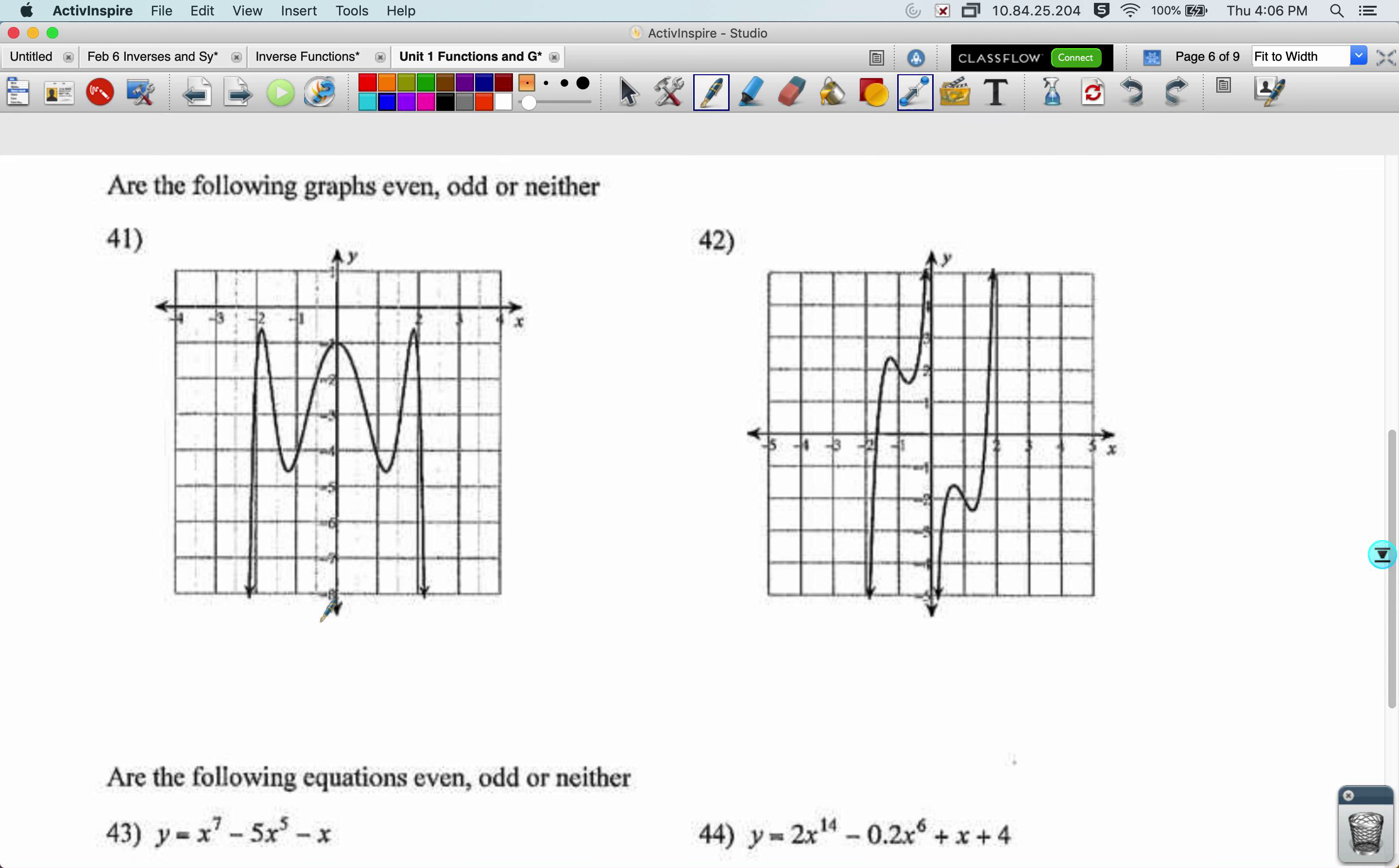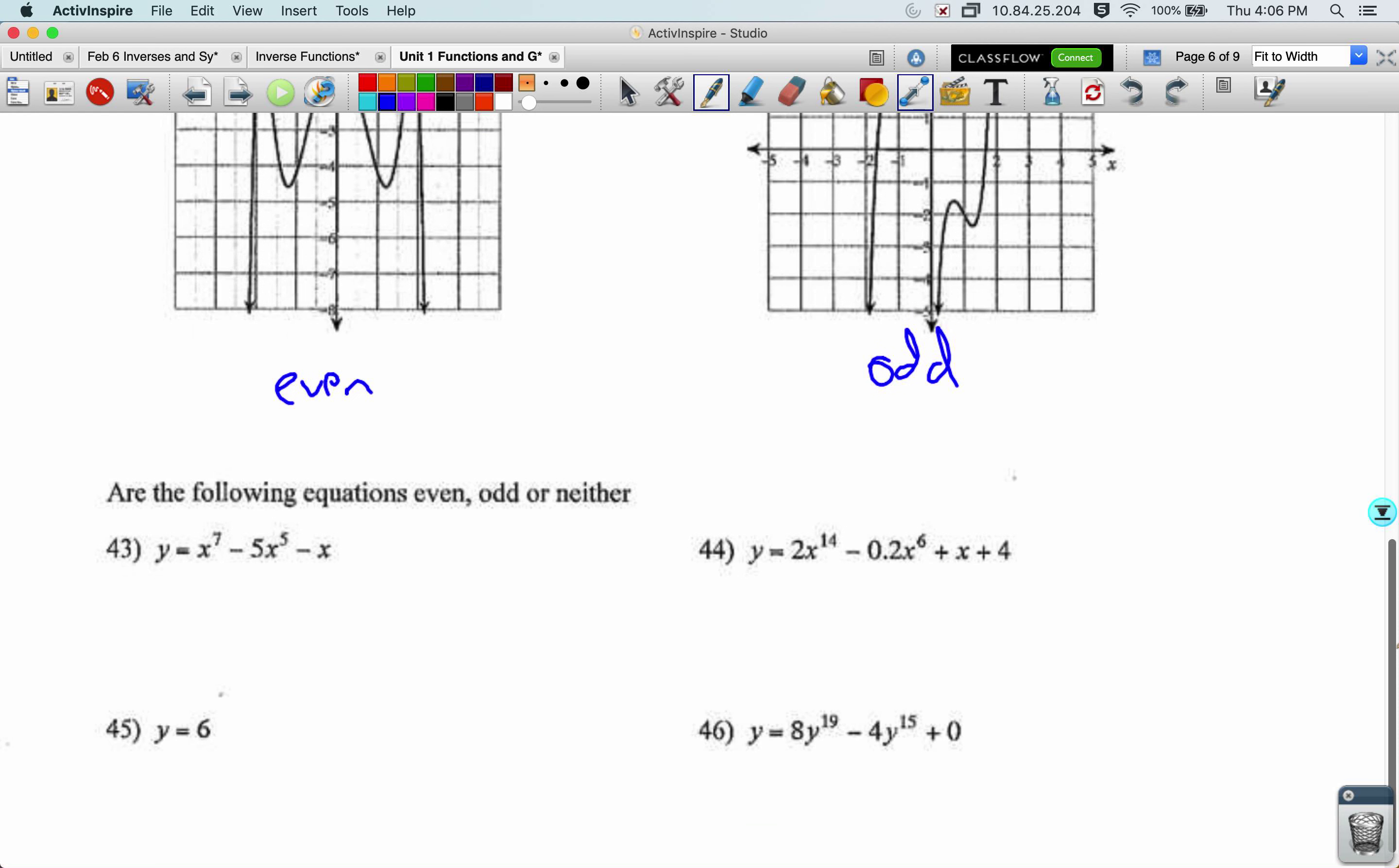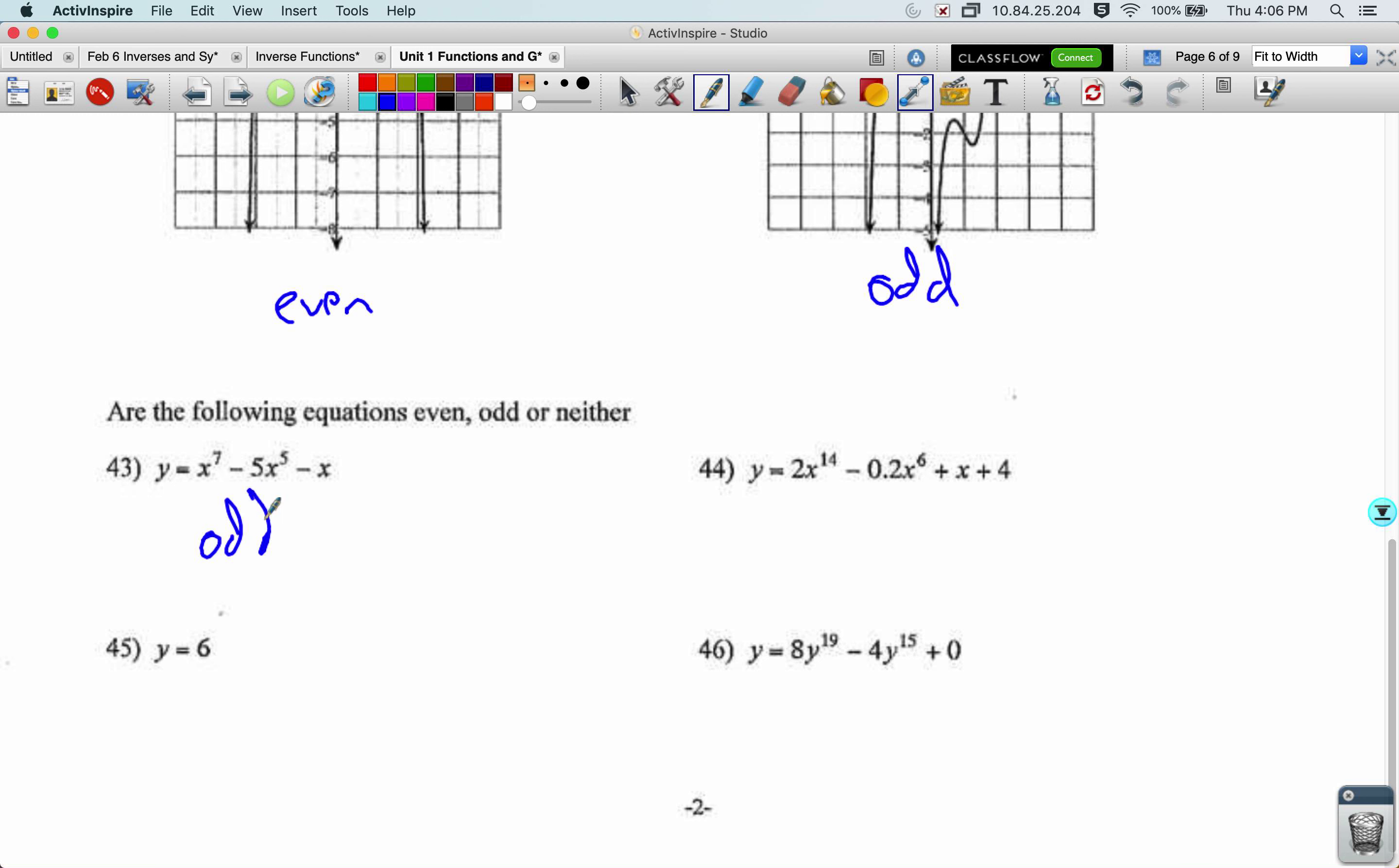Okay. Even, odd, or neither. This one. Even. This one. Odd. This one has y-axis symmetry. That's our definition for even. This one has origin symmetry. That's our definition for odd. Even, odd, or neither. This one is odd. It has only odd exponents, including the invisible 1 on the x. This next one is neither, because it has even and odd, because you count the little 1 here as odd. This one here would be even, because you can think of this as an x to the 0 here, and 0 is even. And this last one would be odd, because only odd exponents, and the constant is 0, so this could just go away.